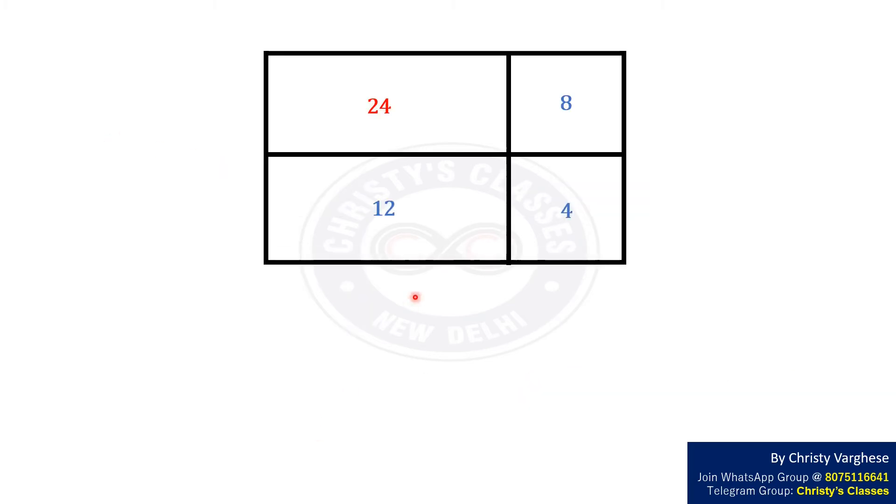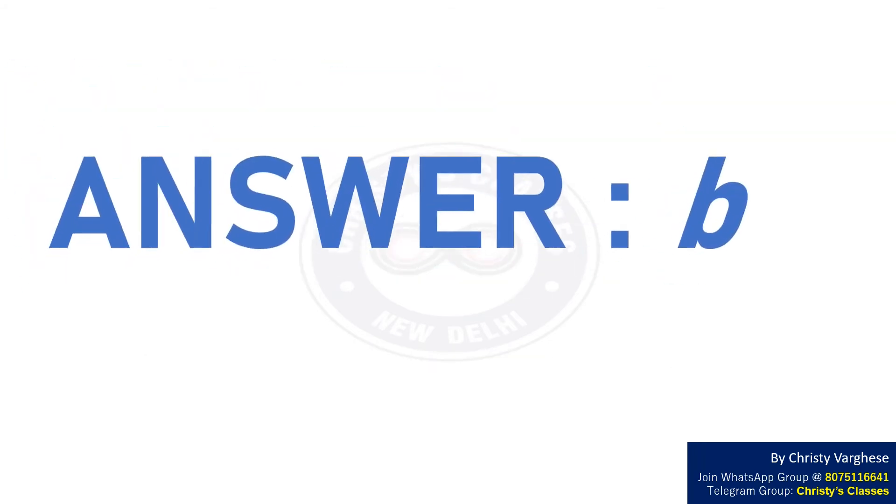Thus, area of the full rectangle equals 24 plus 8 plus 12 plus 4, that is 48. Hence, the right answer to the question is option B.